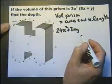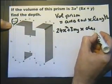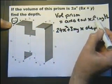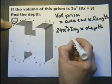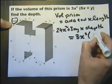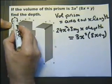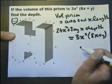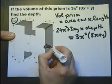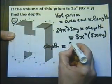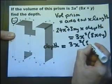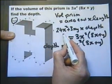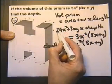So the volume of this prism is this, multiplied by the depth. And we're told that the volume of this prism is in fact this expression. So what we've written down actually equals this. Find the depth. Well in other words, I need to rearrange this to make depth the subject. So depth is going to equal this divided by this.